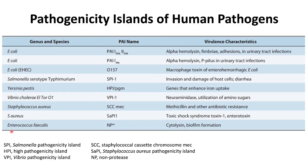Last but not least, Enterococcus faecalis has a pathogenicity island with virulence traits like cytolysin as well as bacterial biofilm formation. Although this is an incomplete list of human bacterial pathogenicity islands from some common pathogens, they are important. With this I come to an end of this presentation. Thank you.